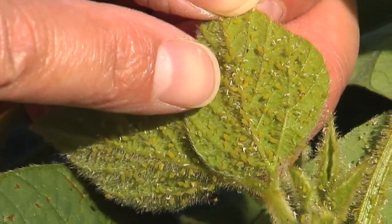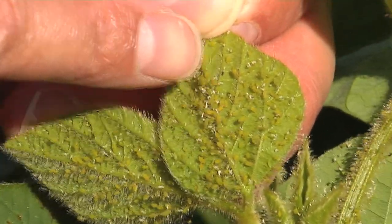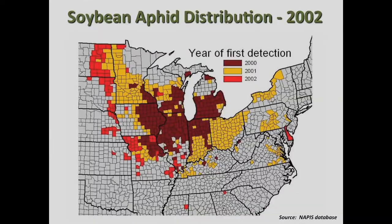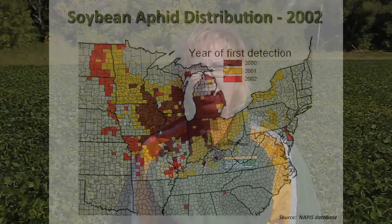Soybean aphid was introduced into the United States in 2000, and it quickly spread throughout the north-central soybean producing states. It was found in North Dakota in 2001, and since then it's been a major pest of soybeans in North Dakota.